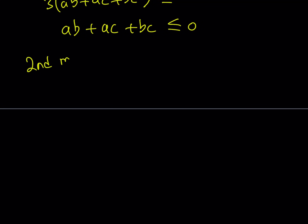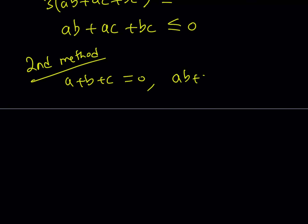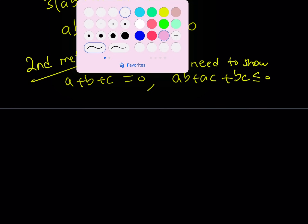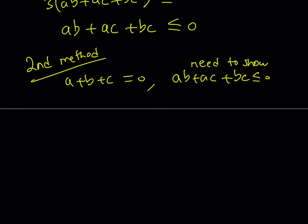Let's talk about the second method. We're given that a plus b plus c is equal to zero and we need to prove that ab plus ac plus bc is less than or equal to zero. I'm going to take the constraint and isolate a by itself. From a plus b plus c equals zero, I can write b plus c as negative a. Now I need to figure out how to use that in my expression.